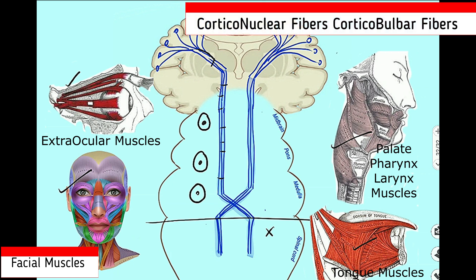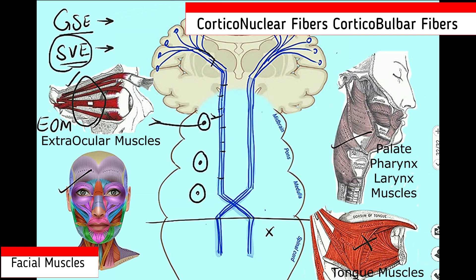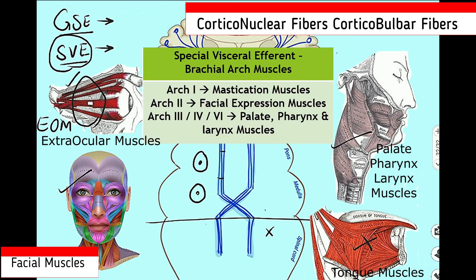We name these fibers corticonuclear fibers or corticobulbar fibers. These upper motor neurons exit the pyramidal tract, synapse with the lower motor neuron in the brainstem, and the lower motor neuron moves toward its destination. These fibers serve two cranial nerve components: general somatic efferent — the skeletal muscles including extraocular muscles and tongue muscles — and special visceral efferent — the branchial arch muscles. Branchial arch 1 muscles are the muscles of mastication; branchial arch 2 are the muscles of facial expression; branchial arch 3, 4, and 6 are muscles of palate, pharynx, and larynx.